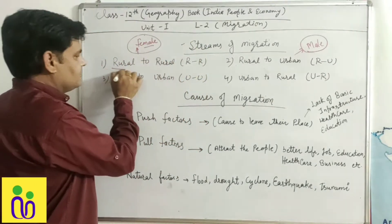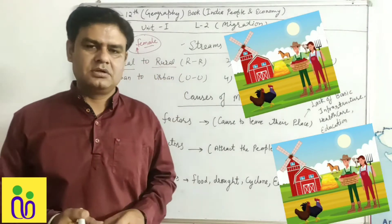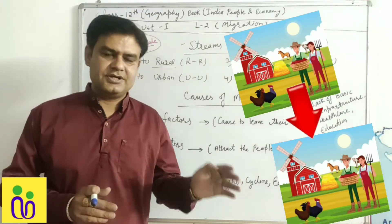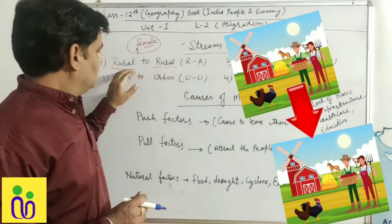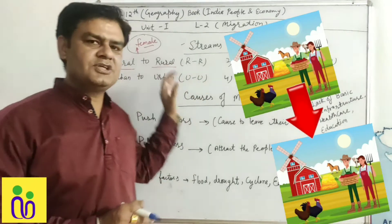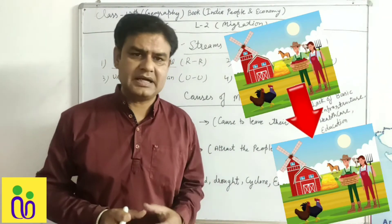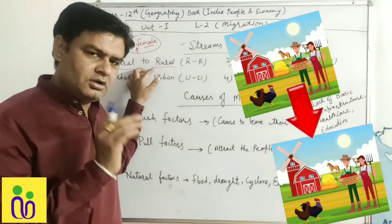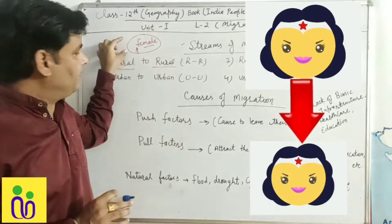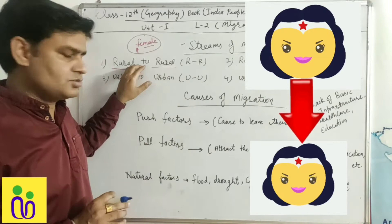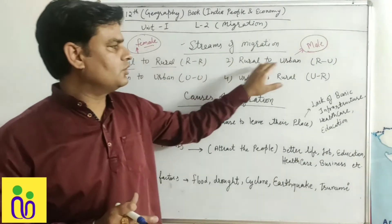First one is streams of migration. Rural to rural — when a person moves from village to village, it's called rural to rural migration. In studies it's seen that the main dominant reason is female migration due to marriage. Because of marriage, females dominate rural to rural migration.